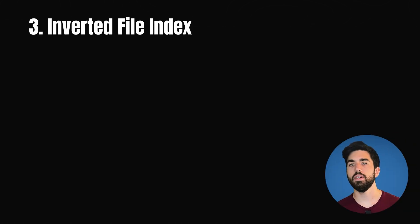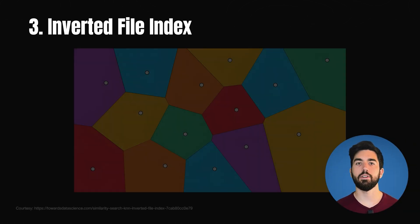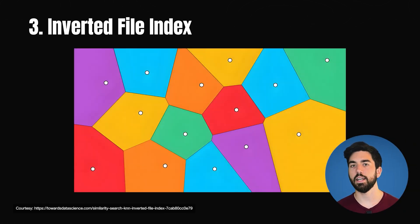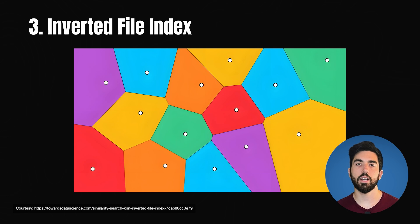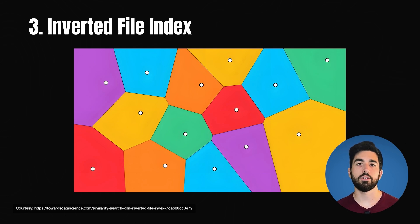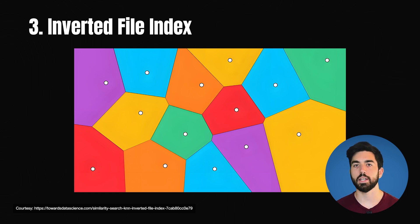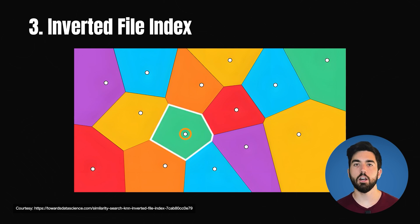Another type of indexing is called the inverted file index. This is similar to the LSH algorithm, but we use clustering to group vectors instead of hashing to create buckets. We take a centroid and compute the clusters.